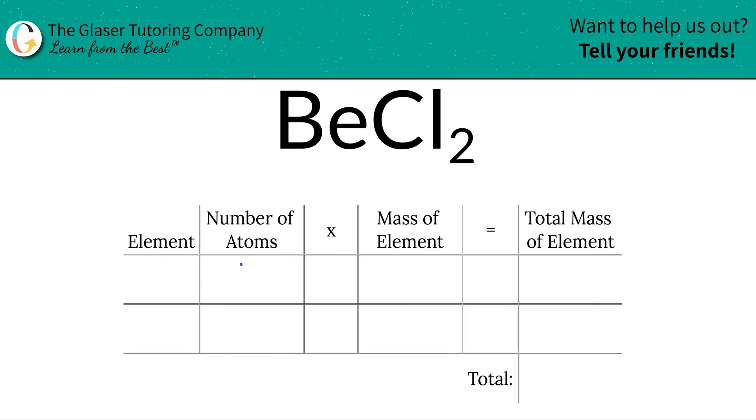So the first thing I'm going to do is write down the particular element. So I have beryllium, Be, and I have chlorine, Cl.